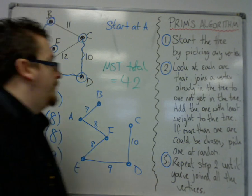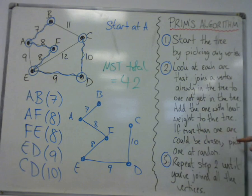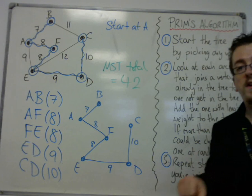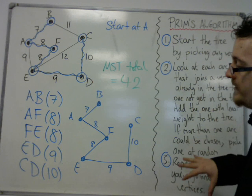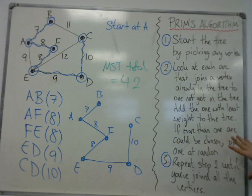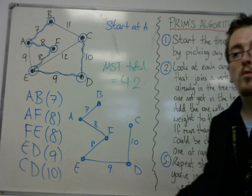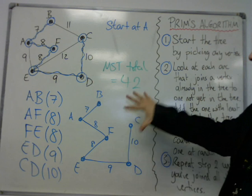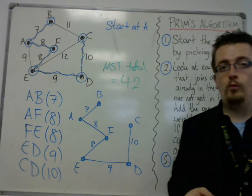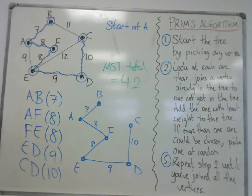And that's how Prim's works. Note that if more than one arc could have been chosen, we pick one at random. If there had been two edges of the same weight that we could have chosen, just pick one. It doesn't matter which. And we repeated this step until all of the vertices were chosen and part of the tree. And that is the first example of how Prim's works.